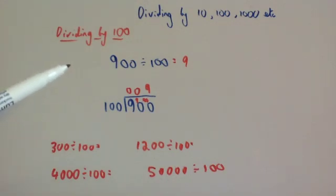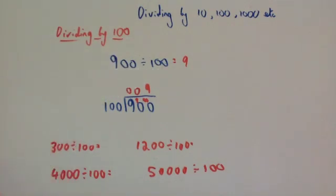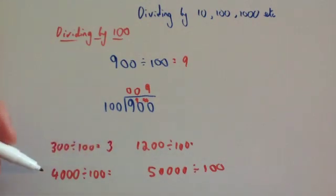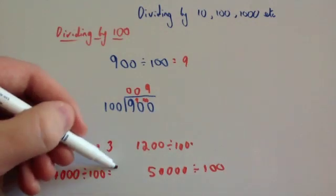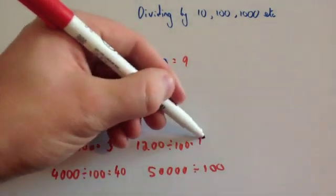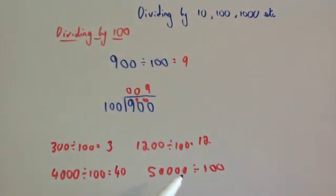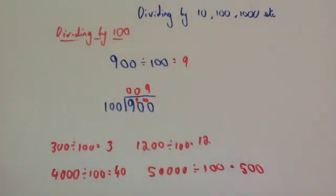Dividing by 10, you take off one zero if it ends in zeros. If it ends in zeros and you're dividing by 100, you would take off two zeros. So 300 divided by 100 — take off two zeros, leaves you with 3. 4,000 divided by 100 — take off two zeros, leaves you with 40. 1,200 divided by 100 — take off two zeros, leaves you with 12. And 50,000 divided by 100 — you take off two zeros and that would leave you with 500.